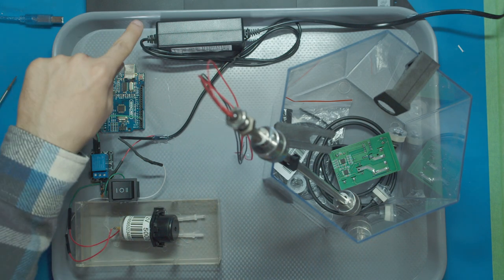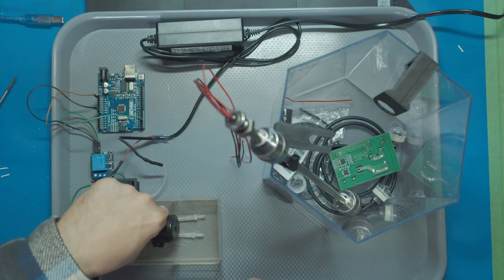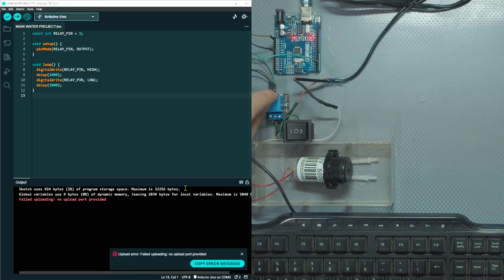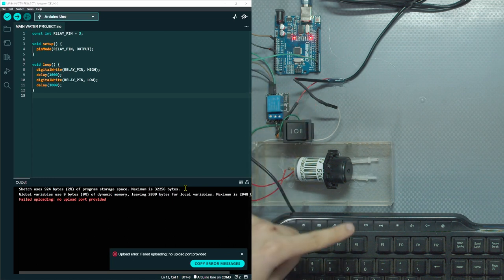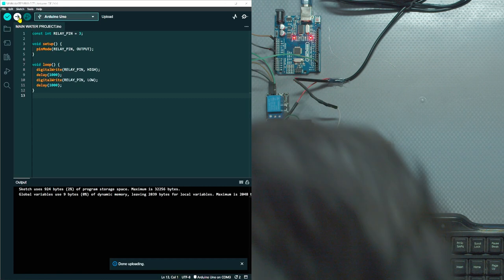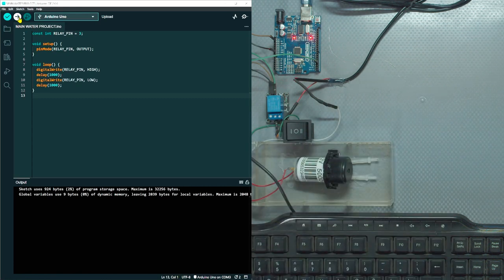So let's connect the Arduino board to our computer and then write some code to make this pump work. When you upload this code, I put up on the screen right here, the relay is going to flash a light and make a loud click for one second. And then it's going to turn off and repeat over and over. There we go. There's that light on and off.